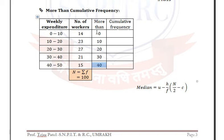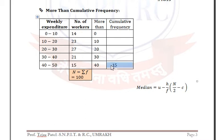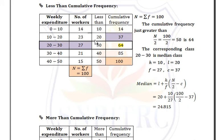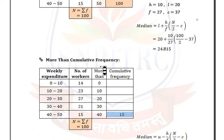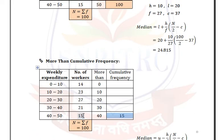Whenever you define cumulative frequency in more than form, start from the last frequency. Here the last frequency is 15, so 15 is the default last value. In less than form the first value is default, but in more than cumulative frequency the last value is default.